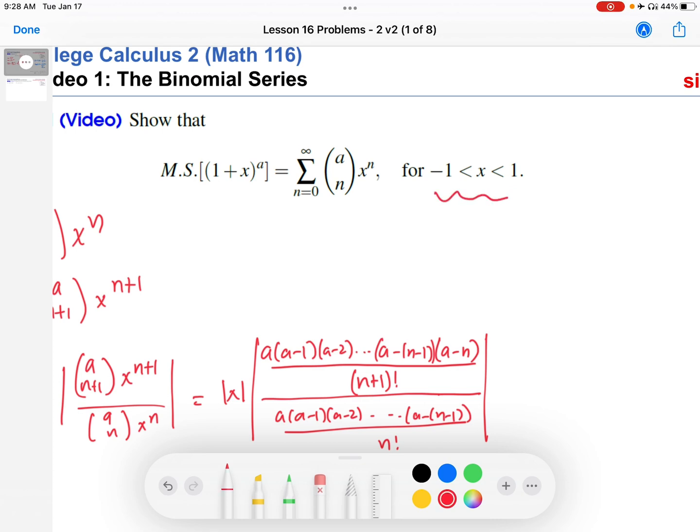So really what we want to show here, looking at this interval, this is absolute value of x less than 1, we would like to show that the radius of convergence of the binomial series is 1. So that's what I'm after in this video.